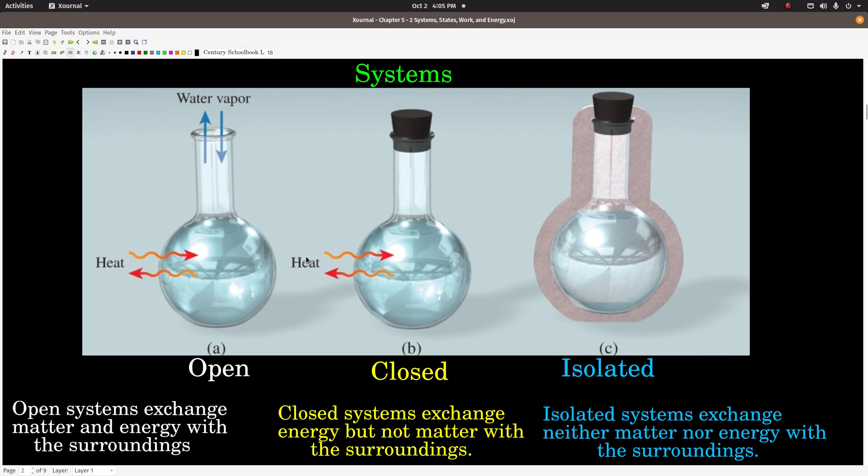In an isolated system, neither matter nor energy can be exchanged with the surroundings. If we put an insulator around this flask with the stopper in it, now the insulator keeps energy from flowing back and forth, and the stopper keeps matter from flowing back and forth. So it's an isolated system. It's really hard to get a perfectly isolated system, but we do our best.